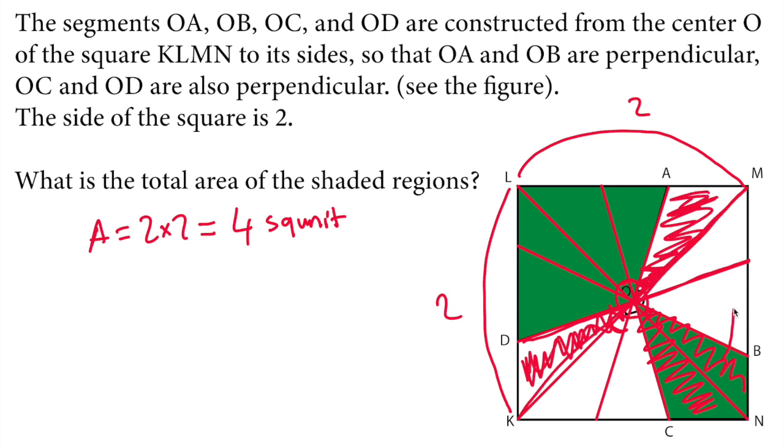We basically move this triangle right here, and we move this triangle right here. Therefore, with the addition of these pieces, this left side becomes half of the square on the top left corner.